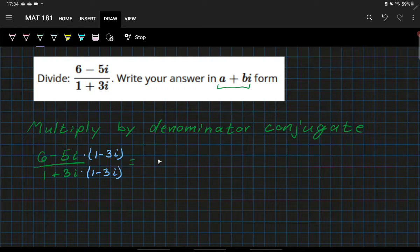Let's look at the result here. In the numerator, we just distribute the two binomials together. So six times one is six, six times negative three i is negative 18i. Distribute the negative five i: negative five i times one is negative five i, negative five i times negative three i is positive 15 i squared.